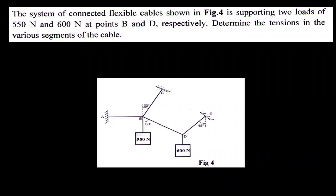The system of connected flexible cables shown in figure 4 is supported by two loads of 550N and 600N at the points B and D respectively. Determine the tensions in the various segments of the cables.